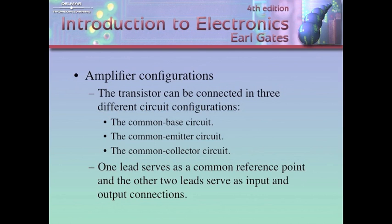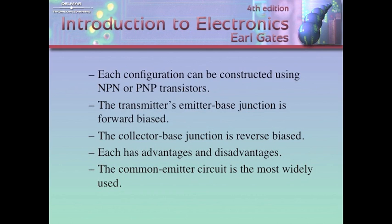Amplifier Configuration. A transistor can be connected in three different circuit configurations: common base, common emitter, and common collector circuit. In these different configurations, one lead serves as a common reference point, and the other two leads serve as input and output connections. Each configuration can be constructed using either NPN or PNP transistors.